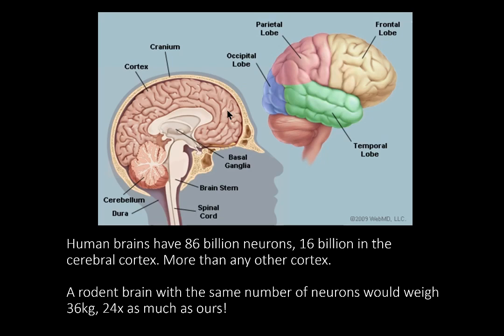A rodent brain with the same number of neurons as ours would weigh 36 kilograms — 24 times as much as ours, requiring a whale-sized body to hold it. The density of our neurons is important. Interestingly, neuron density compared to other primates is very similar — the only significant architectural difference is that our brains are simply larger than theirs.